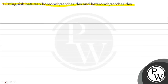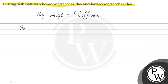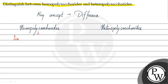To answer this question, we will look at the concept of the differences between homopolysaccharides and heteropolysaccharides. Homopolysaccharides are carbohydrates which have a single type of monomer present.